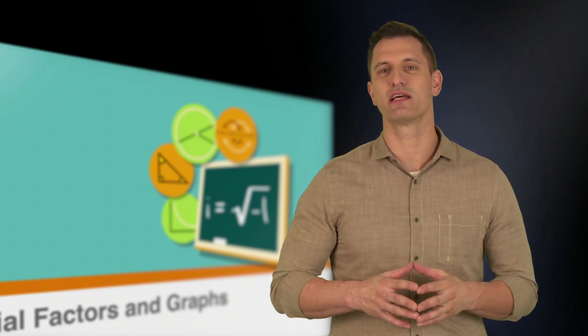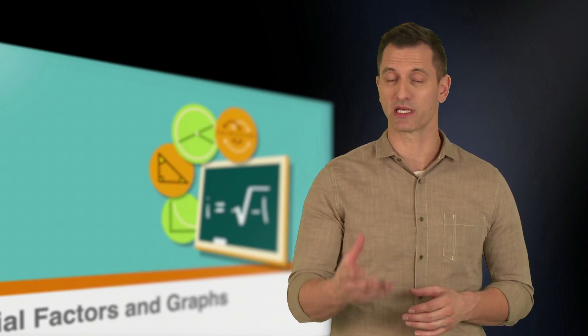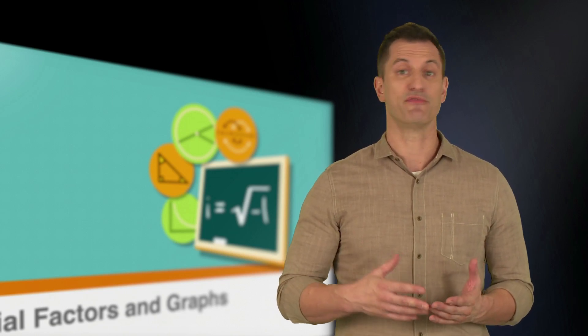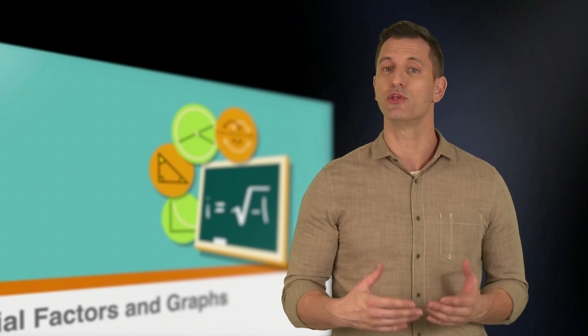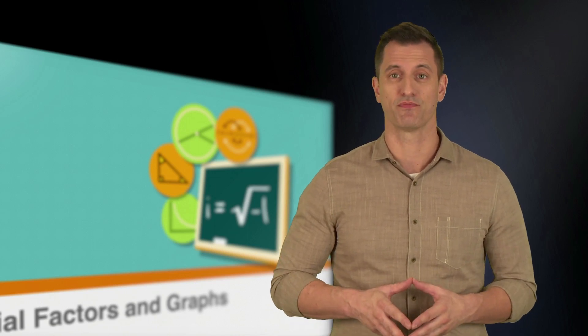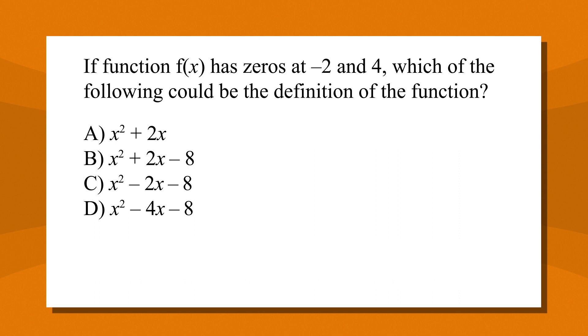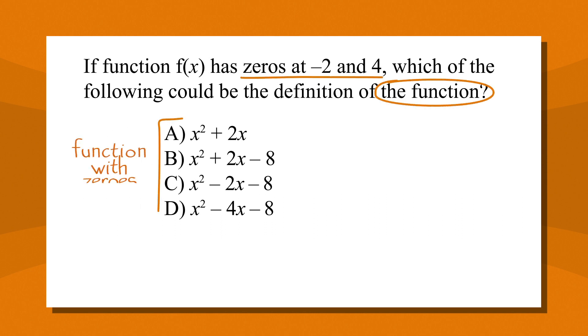Okay, we've learned how to identify the zeros of a polynomial from looking at a graph and an equation. If you know the zeros of a polynomial, you can figure out an equation that works with them. Let's look at another example. If function f of x has zeros at negative 2 and 4, which of the following could be the definition of the function? The answer choices are all possible functions. Start by underlining the facts, circling the key words, and labeling the answer choices.